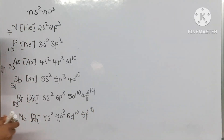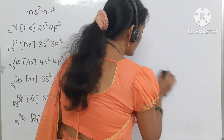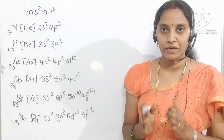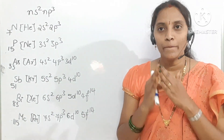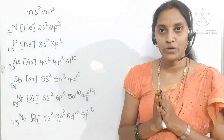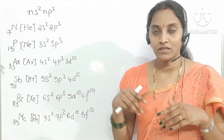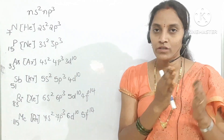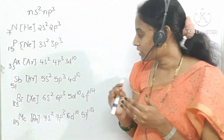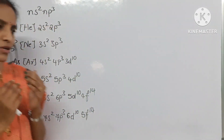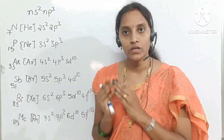These are the outer shell electronic configurations of 15th group or 5A group elements. The general outer shell configuration ns²np³ means a completely filled s orbital and a half-filled p orbital. This completely filled s and half-filled p orbital gives extra stability to the 15th group elements compared to the 14th group elements in the same period.